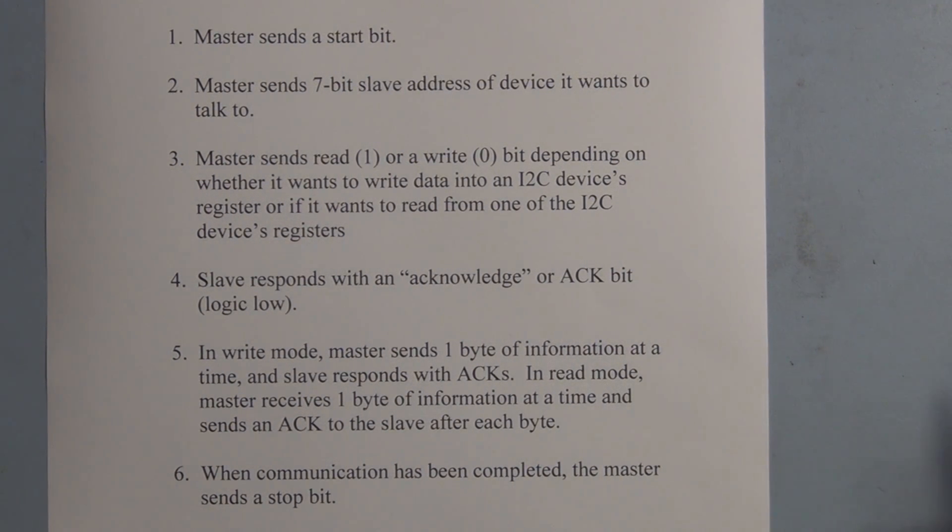So one register has the current temperature stored in it in degrees Celsius. The second register has configuration. There's a feature of this digital temperature sensor, you can put it into standby, which is a lower power using mode. We're not going to be using that. We're only going to be reading from the register that contains the temperature information.